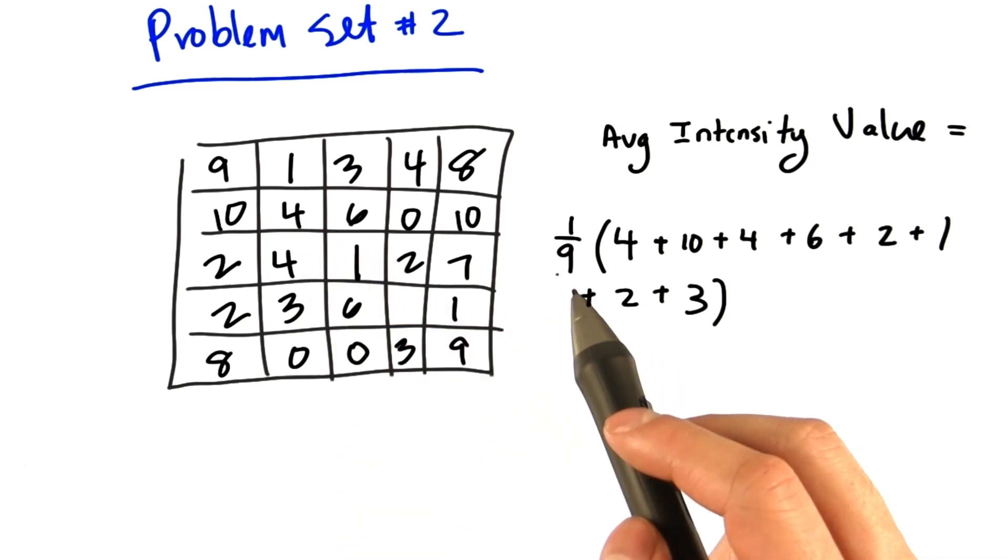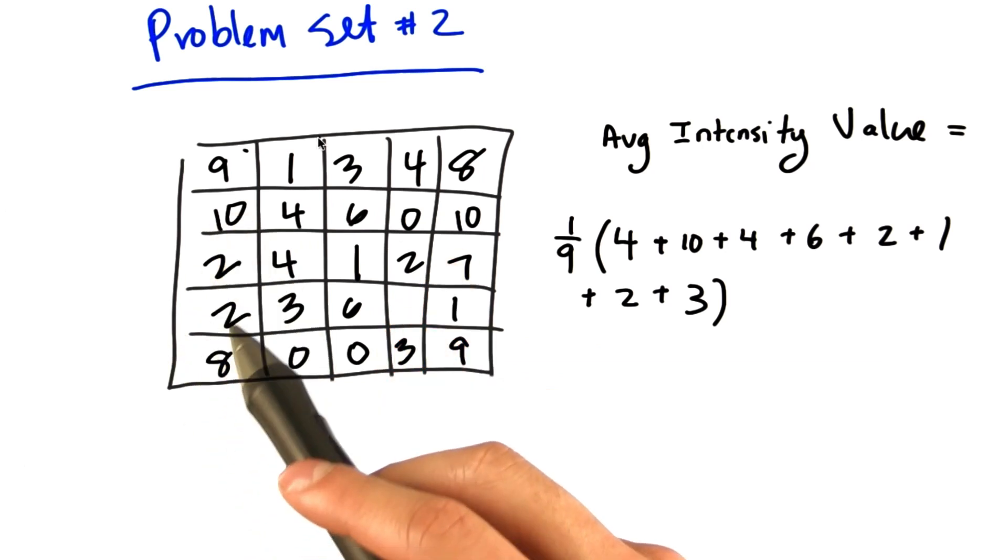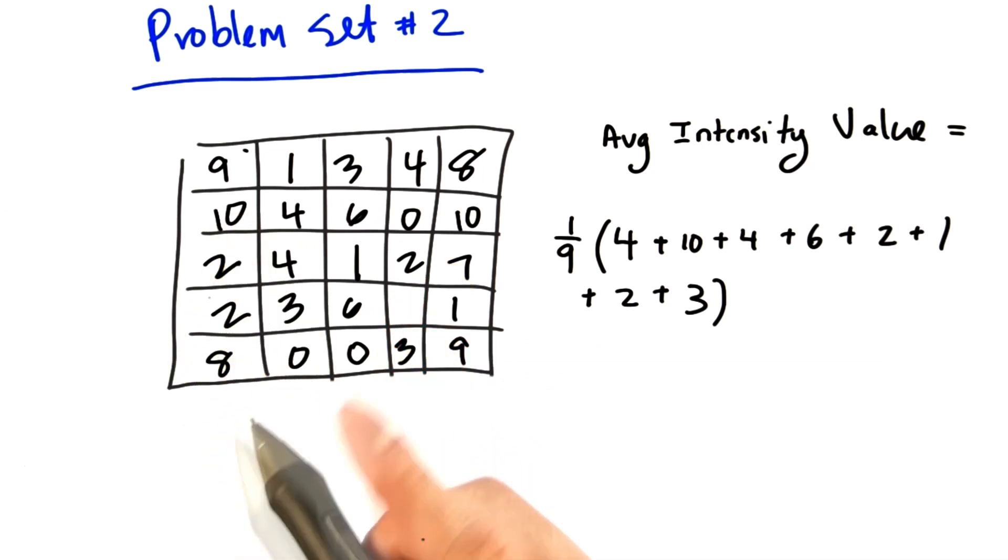So if we do this operation for every pixel in the image, we will arrive at a blurred version of the input image. However,